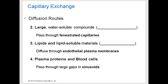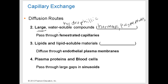When we look at larger water-soluble or hydrophilic compounds — which includes some hormones as well as some polypeptides — these solutes are too large to pass through the clefts present in normal continuous capillaries. So these larger solutes can only cross in and out of the bloodstream via diffusion through fenestrated capillaries, which have pores large enough to allow them to cross. We see these in some endocrine glands, in the kidneys, and in the intestines.